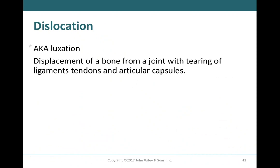Dislocation, also referred to as luxation, occurs when a bone is pulled or pushed in a way that displaces it from the joint. Articular capsules and ligaments often tear as well when a dislocation occurs. This concludes chapter nine; the next video will cover chapter ten on muscles.